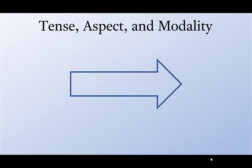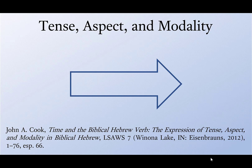Tense, aspect, and modality — these three concepts are interrelated, and they have to do in some way with verb ideas in every language of the world. To talk about this in relationship with Biblical Aramaic, I'm going to use an arrow, following John Cook's work in the Biblical Hebrew verb. We can think of this as an action taking place through time, where there's a former time on the left and a later time on the right.